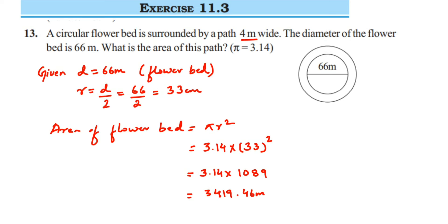I had written 33 centimeters earlier — I am sorry, it has to be meters. Now we have the area of the flower bed, and next we are going to find the area of the whole thing, that is the flower bed including the path.